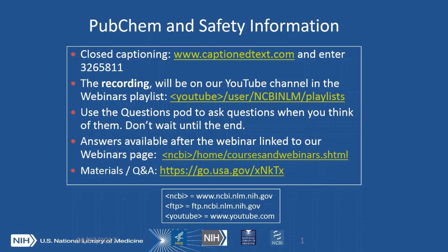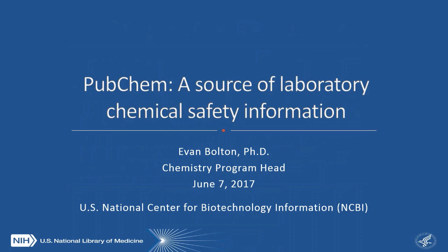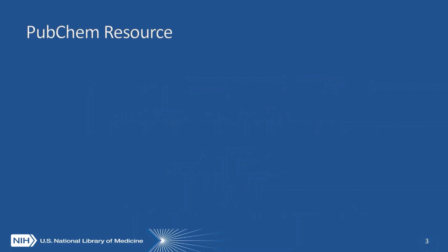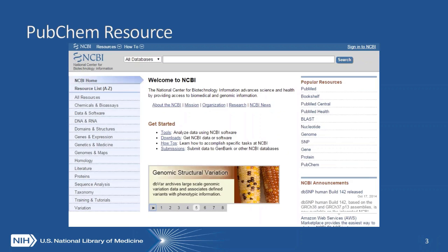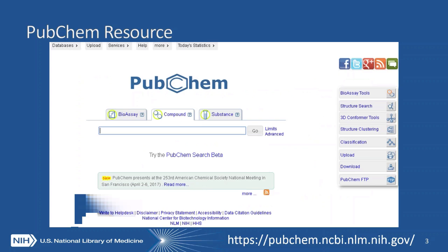I will turn this over to Evan. Hello everybody, it is nice to see we have a nice audience. Today I'm going to talk to you about PubChem as a source of laboratory chemical safety information. If you are not aware of what PubChem is as a resource, I'll give you a quick overview. We're centered here at the National Center for Biotechnology Information, and we contain the chemical content found within NCBI within the resource called PubChem. This is our home page — I encourage you to explore it, especially the Services tab at the top, so you can have greater familiarity with the resource.